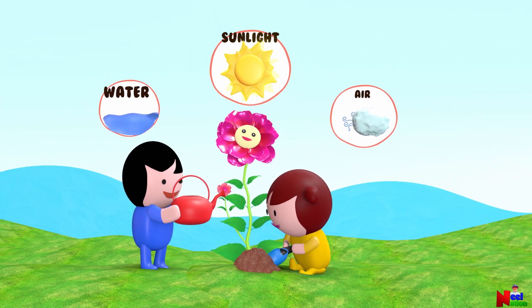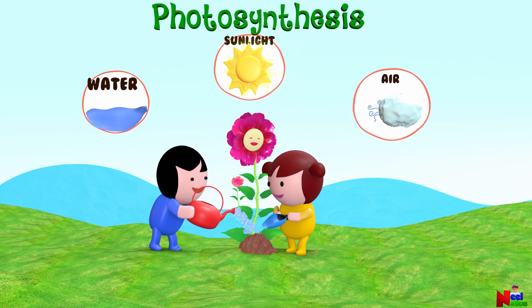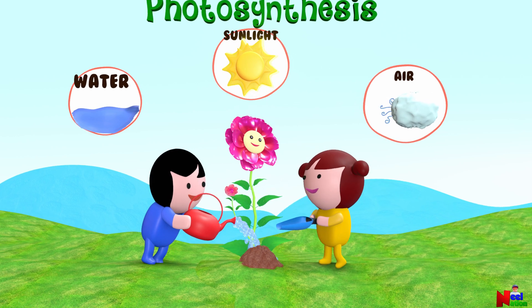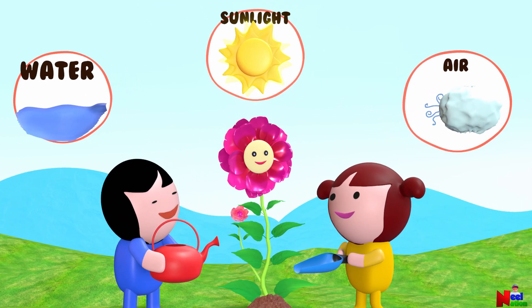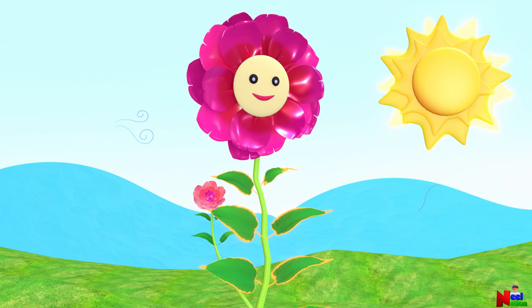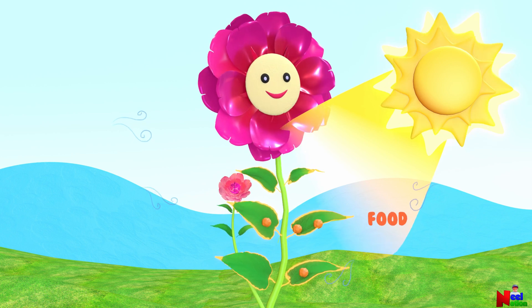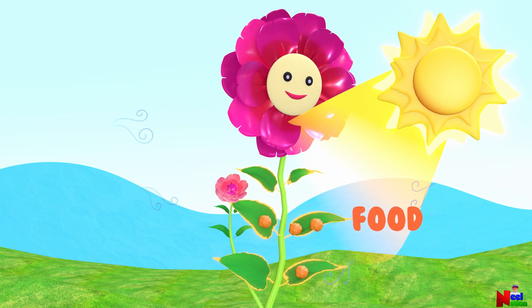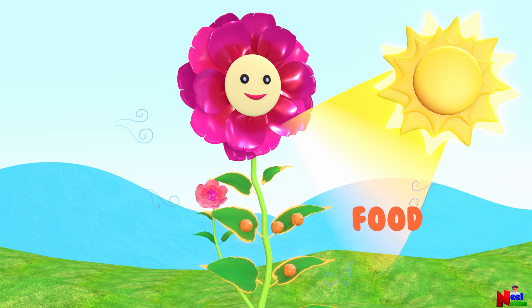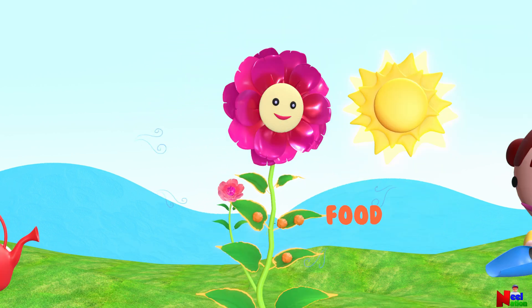This process is called photosynthesis. Plants make their own food using sunlight from the sky, water from the ground, and a special gas called carbon dioxide from the air. During photosynthesis, plants combine these ingredients to create their own food and energy. Isn't that awesome?